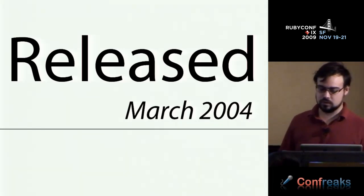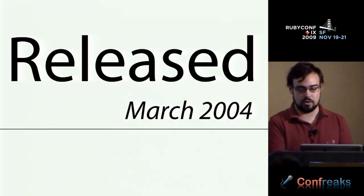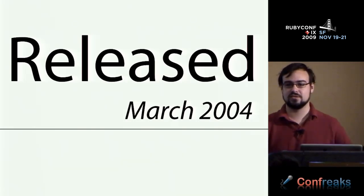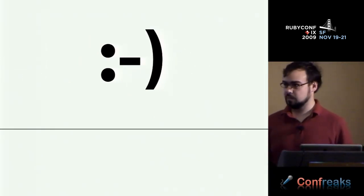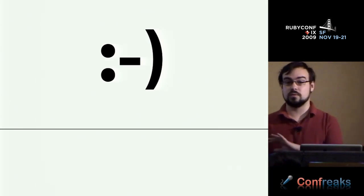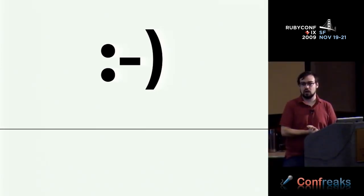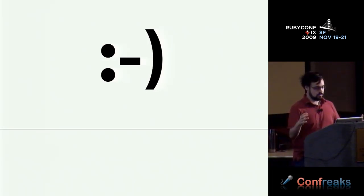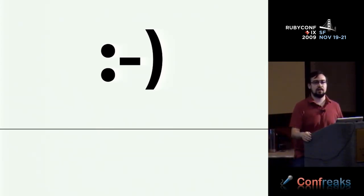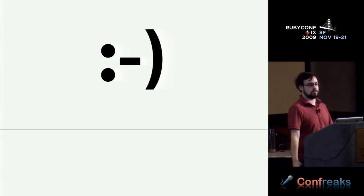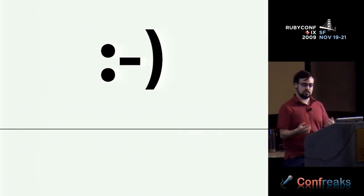RubyGems was released in March 2004, starting with version 0.2. RubyGems is actually really good — it's maybe the best packaging system for a language that exists. There are people attempting to say we should have something entirely different conceptually, and I don't believe that. I think RubyGems right now is a pretty good conceptual fit, but there are specific implementation problems I'm going to talk about.